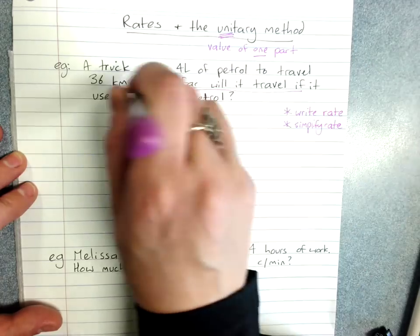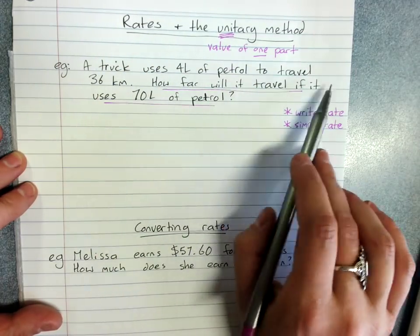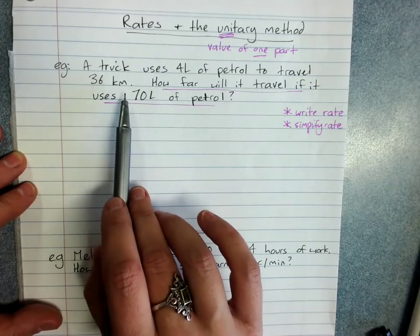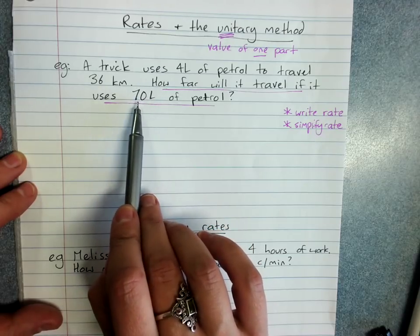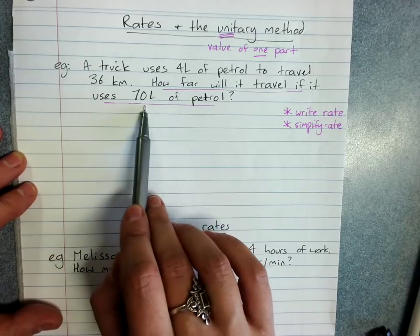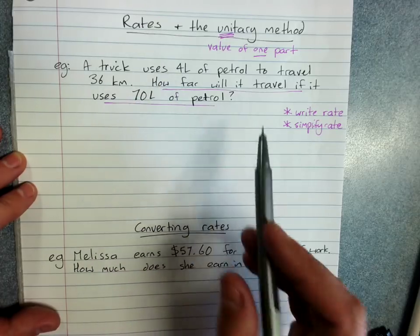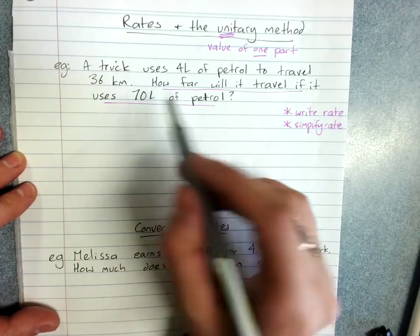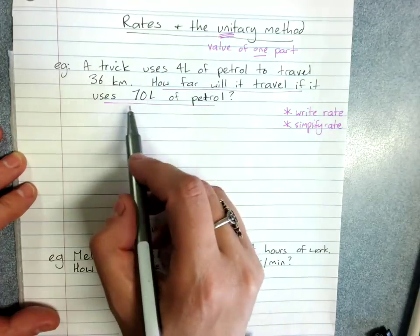The question will usually help us with that. How far will it travel if it uses 70 liters of petrol? This helps us realize that I need to work out its distance for one liter and then multiply that by 70 for 70 liters. So this helps me realize that I've got to have liters second so that I get down to one liter, that's our unitary method part, and then I can take that to 70 liters.